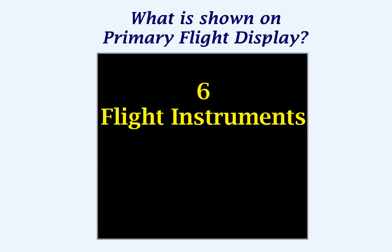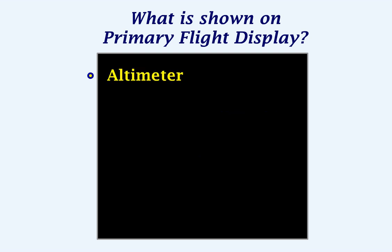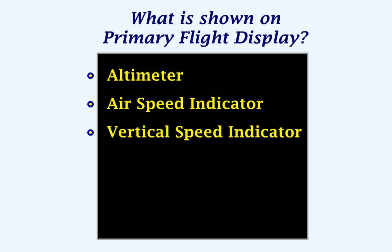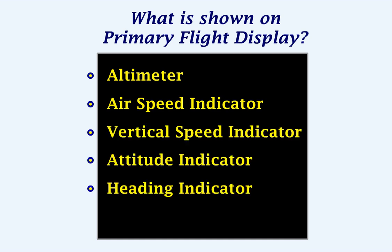The PFD combines information of six different flight instruments into a single display. These six instruments are: altimeter, airspeed indicator, vertical speed indicator, attitude indicator, heading indicator, and the turn coordinator.